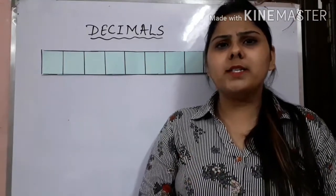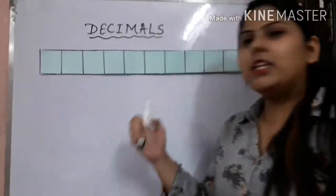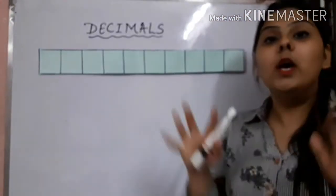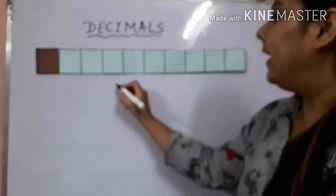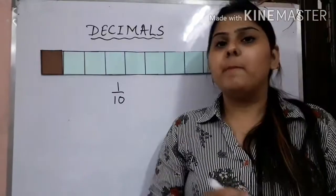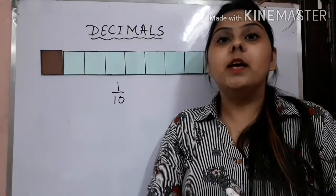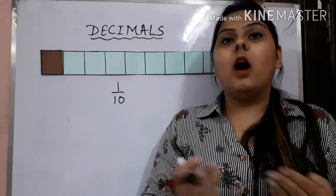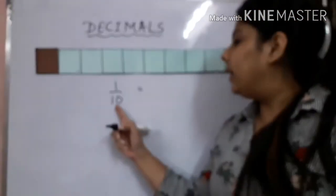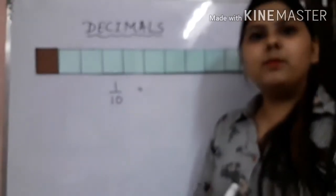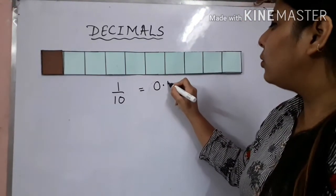In order to understand this topic in a better way, I have taken a strip of paper and divided it into 10 equal parts. Now, what if I want to shade one part out of these 10 equal parts? Let us represent the fraction for this shaded portion — it would come out to be 1 upon 10. This fraction can be converted into a decimal number based on the number of zeros in the denominator, so the decimal comes out to be 0.1.